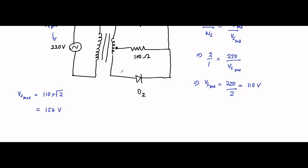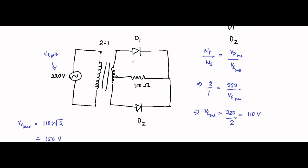An important difference between bridge type and center-tapped full wave rectifier circuits is that here the secondary winding voltage is 156V, but from the center-tap point to each end, this voltage gets equally divided — that is 156/2 = 78V on each side. This 78V is the maximum value of the center-tap point voltage.